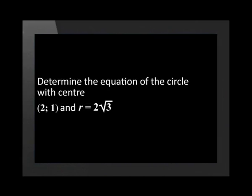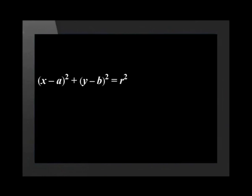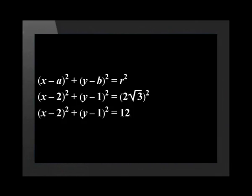Now let's look at how to find the equation of a circle when we know its center and the length of the radius. Determine the equation of the circle with center (2, 1) and a radius equal to 2 square root of 3. Always start with the equation where the origin is not the center: in brackets x minus a, squared, plus in brackets y minus b, squared, equals r squared. By substituting the given center coordinates and the value of the radius we get (x minus 2) squared plus (y minus 1) squared equals (2 square root of 3) squared. The right-hand side equals 12 and this is the equation of the circle.